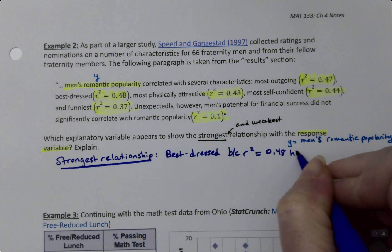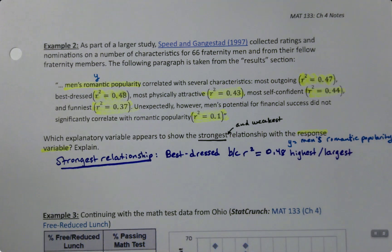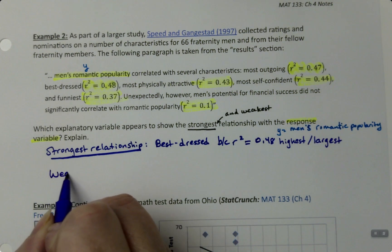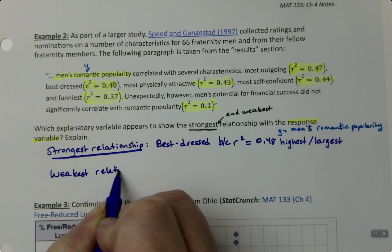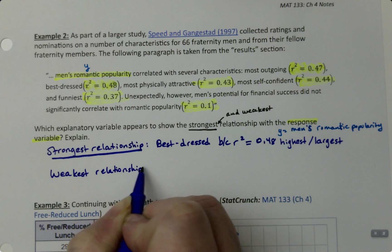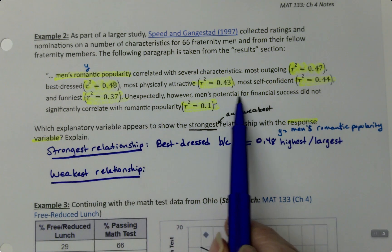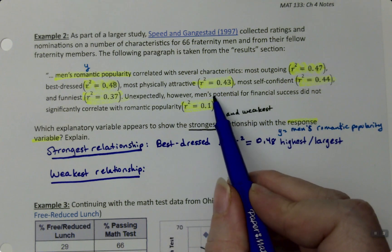The weakest relationship, by contrast, would have the lowest R-squared value, and so that would be potential for financial success.